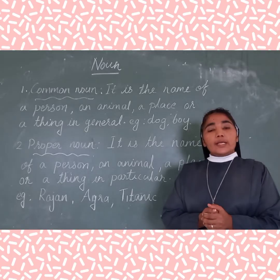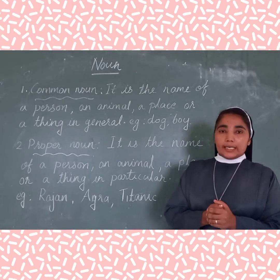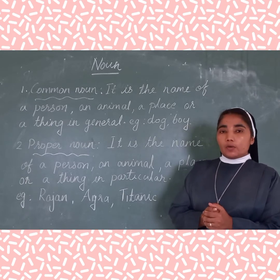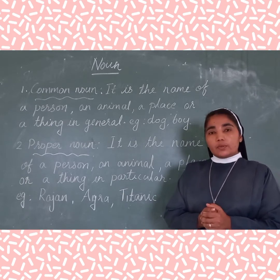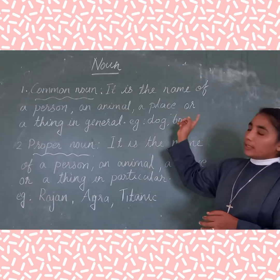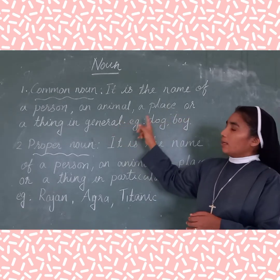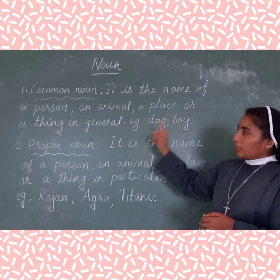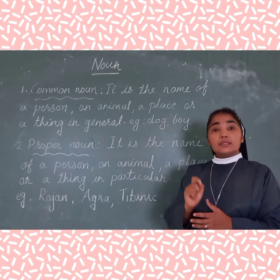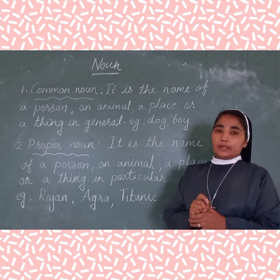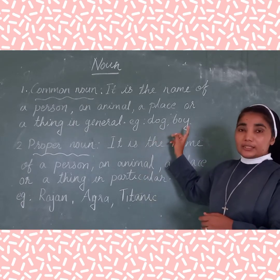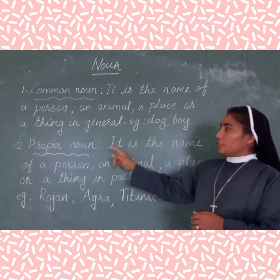Now let us learn more briefly about common noun, proper noun, abstract noun and collective noun. What is the common noun? It is the name of a person, animal, a place or thing in general. It is a general name. For example, boy, dog — these are general names.